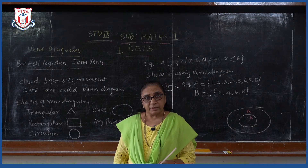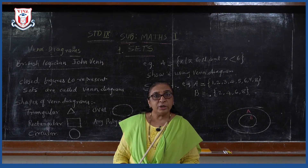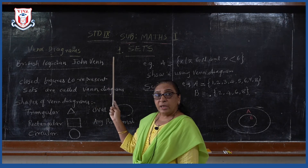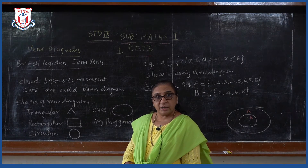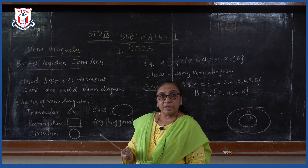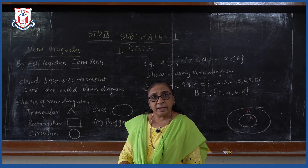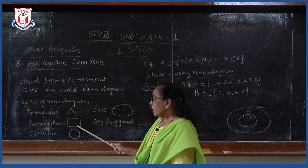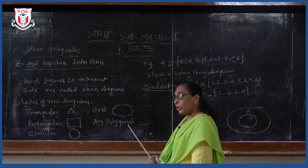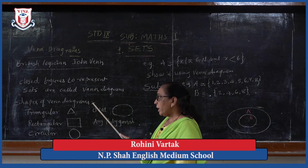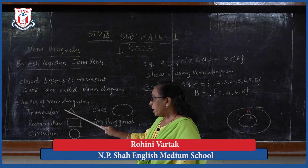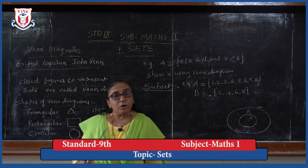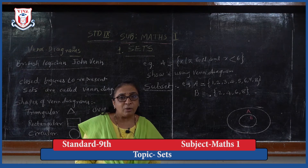What do you mean by Venn diagrams, and who started using them? A British logician, John Venn, started to use closed figures for sets — all elements are written inside closed diagrams. Closed diagrams means shapes like triangle, rectangle, circle, oval, or any polygon. Venn diagrams can be drawn in any shape: triangular, rectangular, circular, oval, or polygonal — meaning pentagon, hexagon, septagon, octagon, and so on.